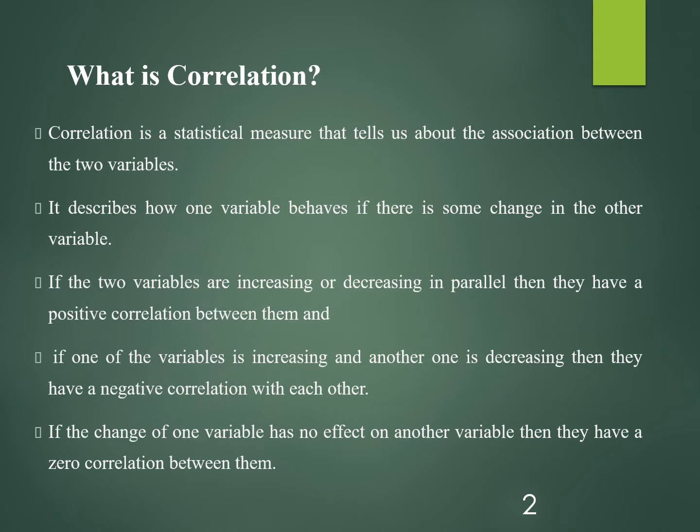Different types include positive correlation, negative correlation, and zero correlation. If two variables are increasing or decreasing in parallel, they have a positive correlation. If one variable is increasing and another is decreasing, they have a negative correlation. If the change of one variable has no effect on another variable, they have a zero correlation between them.